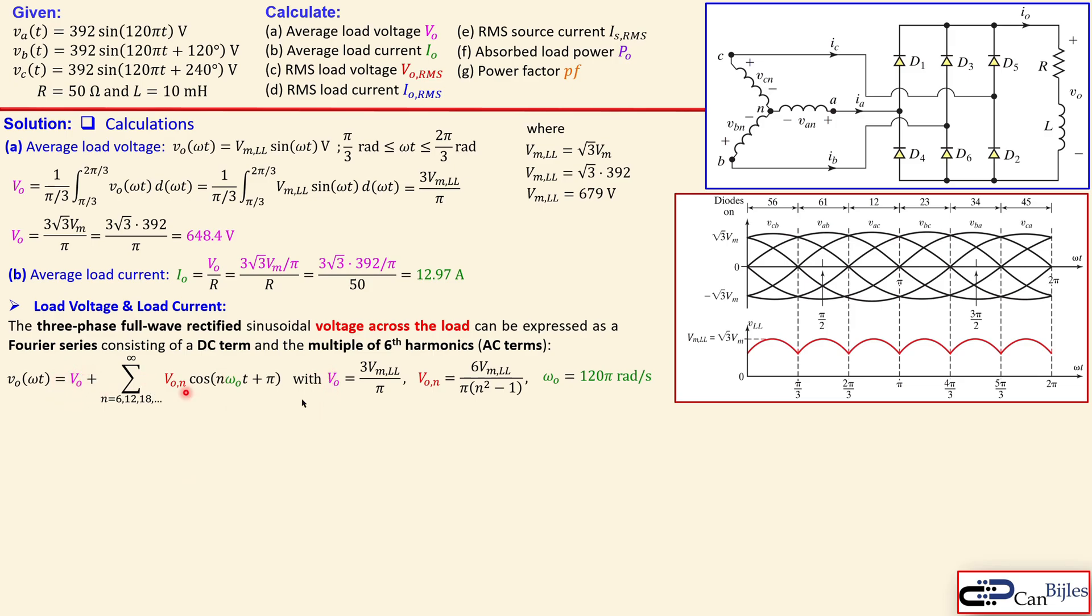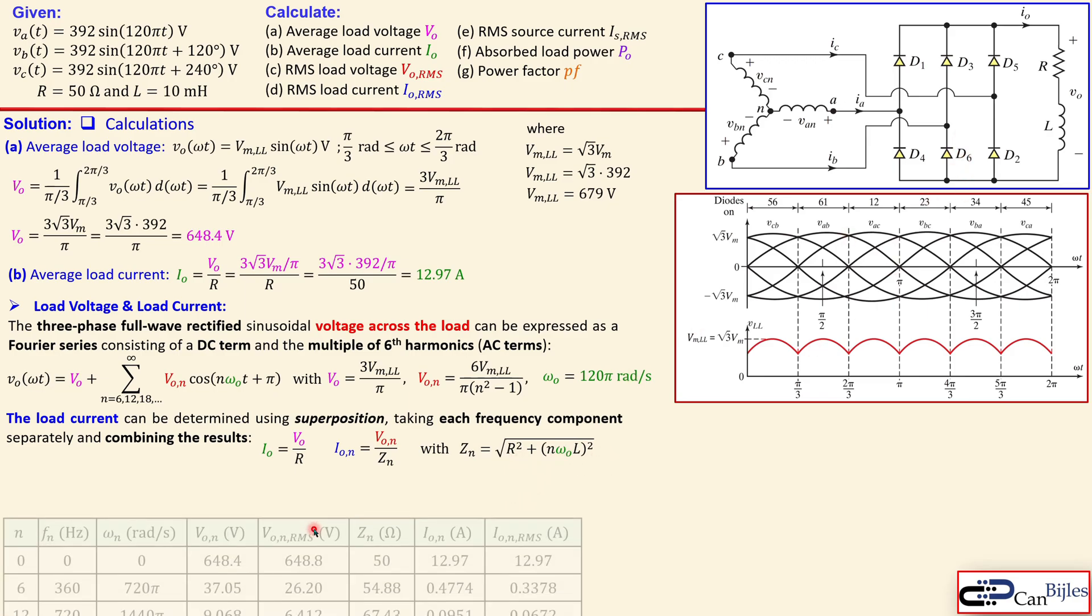And here you know we already know that also that the average value is given by this expression we have seen it in example I mean the question A and this is the expression for the amplitude of the harmonics you can see that six times the line to line voltage over the pi times the n squared minus one in this case and the fundamental frequency here in this case is 120 pi because that's actually here the source voltages. Okay now the load current can then be expressed using superposition taking each frequency component separately and combining the results so we know that for each voltage we can take the average value and also the harmonics amplitudes and we can also put it in the formula here using Ohm's law and then calculate the specific current and impedance here is given by this expression because we have a resistor in the inductor here in this load.